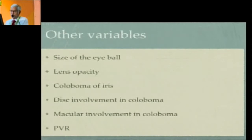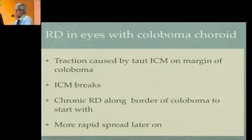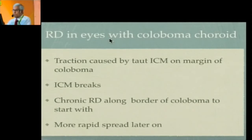Other variables include the size of the eyeball, which could be very small; the lens, which can be partly or completely opaque; coloboma of the iris; and variable involvement of the disc and macula in the coloboma. PVR may also be present. Additionally, the ICM itself could be taut and cause the retina to be lifted up at the coloboma margin. The detachment at the coloboma margin can be chronic because very often the PVT is not detached, and traction leads to repeated occurrences of RPE disturbance and demarcation lines. More rapid spread occurs once some amount of liquid becomes available for the retina to detach.